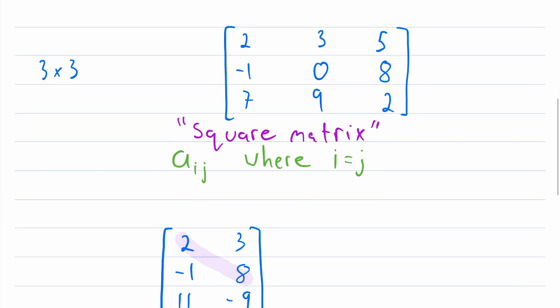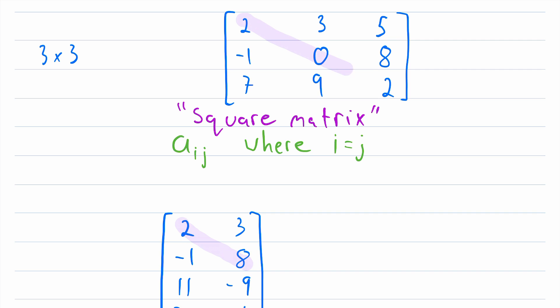Sometimes you might also want to refer not to this diagonal of a matrix, but instead to this diagonal, going from the bottom left to the top right. This is sometimes called a counter diagonal or an anti diagonal. And I'll talk about counter diagonals in another video.